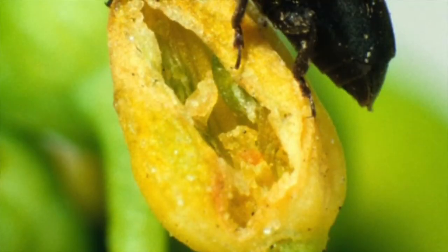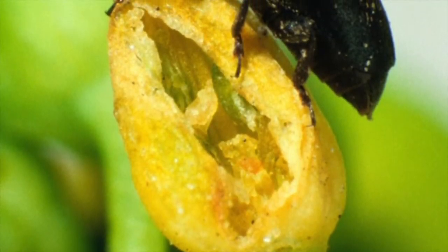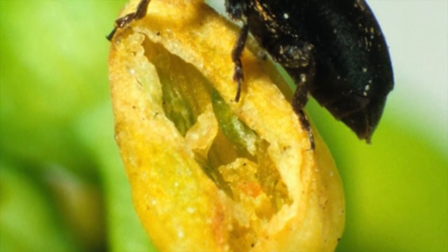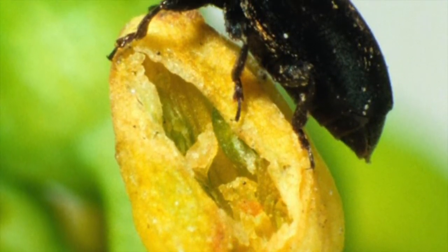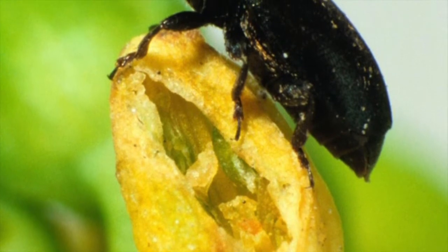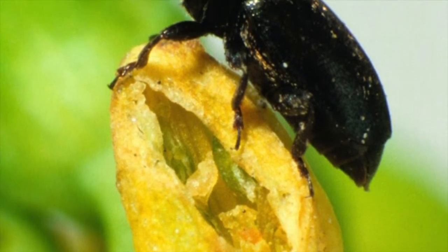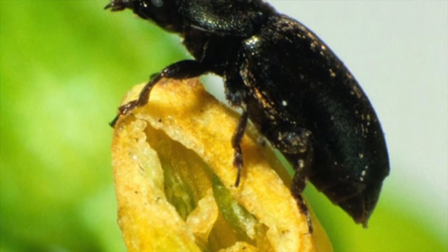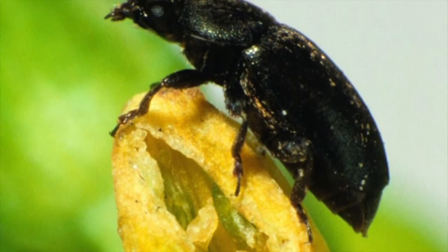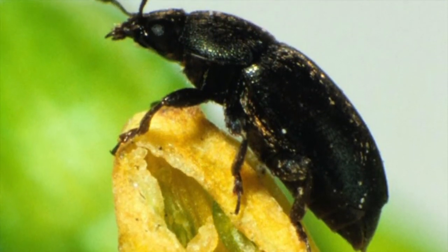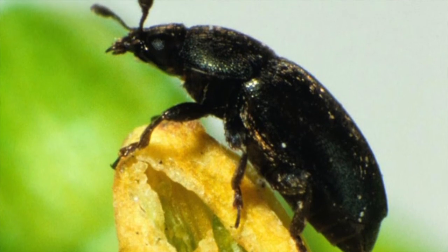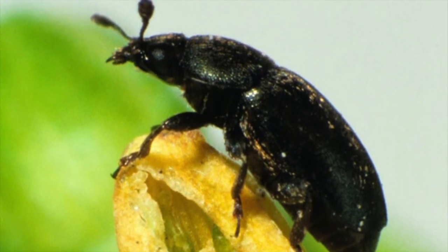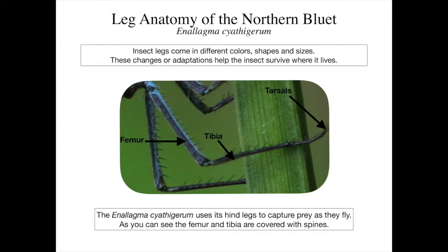All insects have a head, thorax, abdomen, and six jointed legs. Many insects can share the same ecosystem because each kind of insect has different physical adaptations. Let's look at legs for example. All insects have femurs and tibias; however, they are different for each insect.